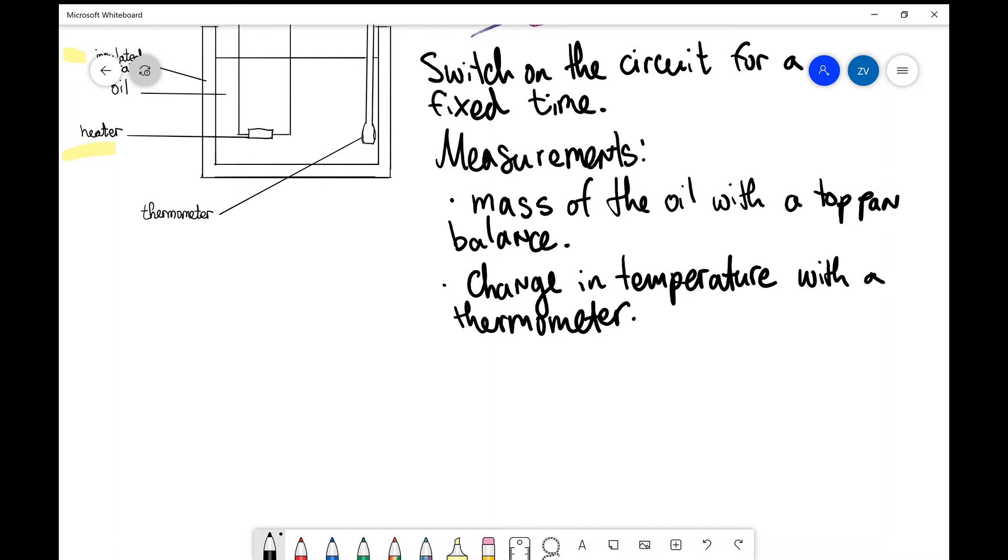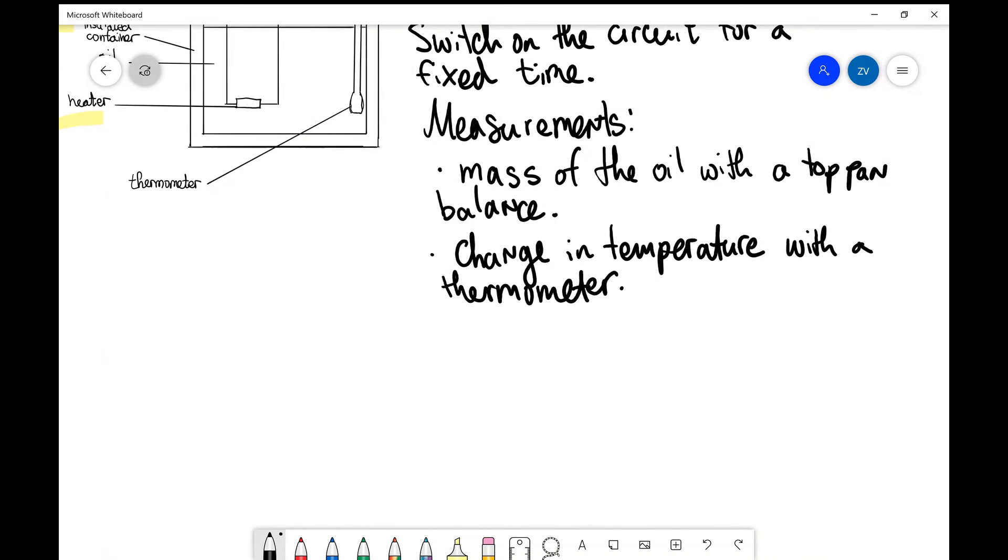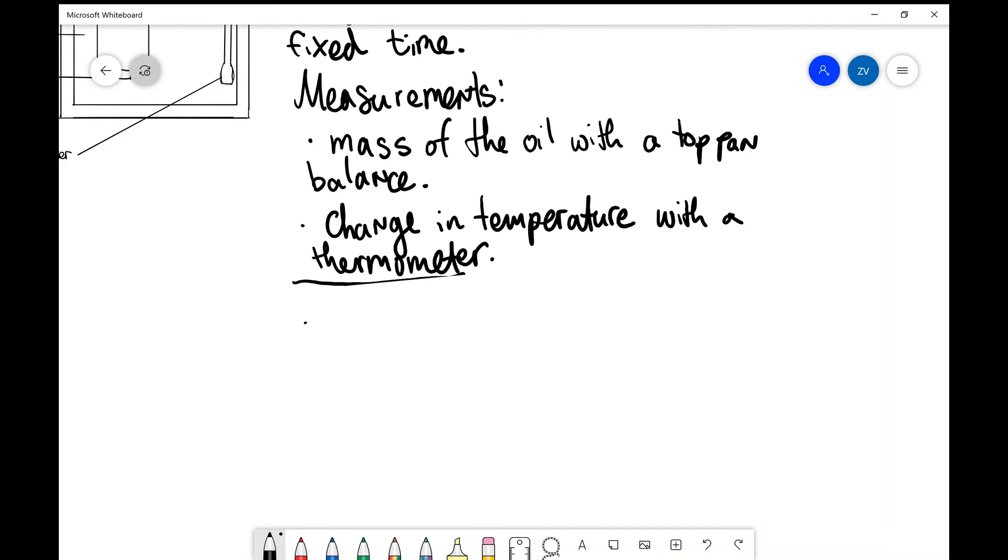Very often in the mark schemes we can see that they're asking us to not only introduce our measurements but what we're going to be measuring those with precisely. This is really important. What we need to measure next is the time interval. We're going to use a stop clock for this. So we need to add to our list of measurements the time interval, the fixed time interval, and we're going to do that with a stop clock.